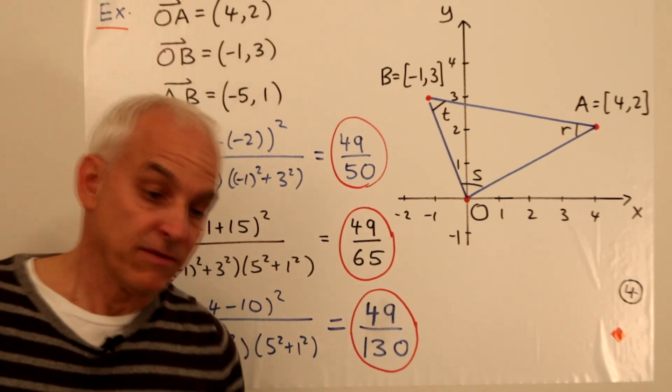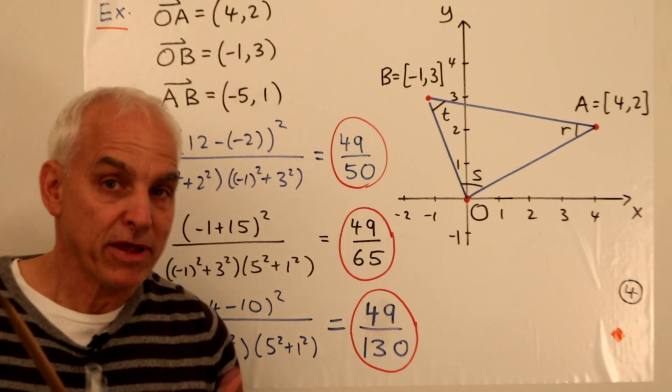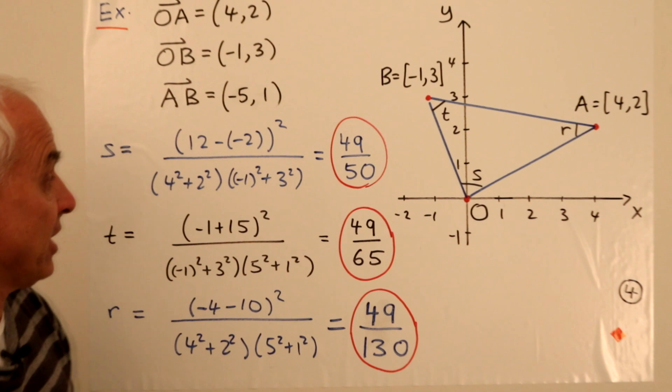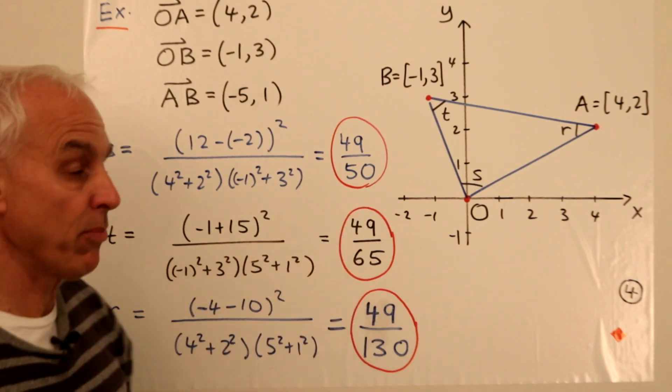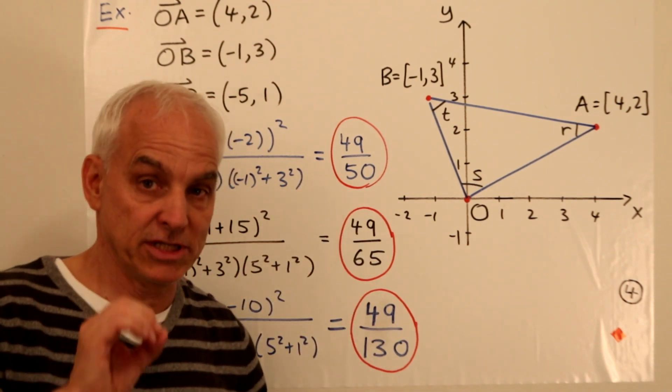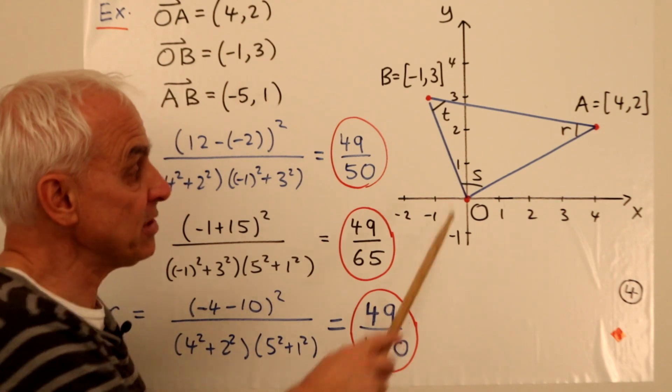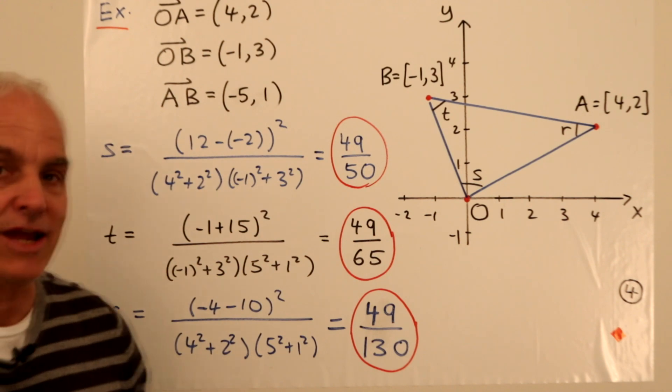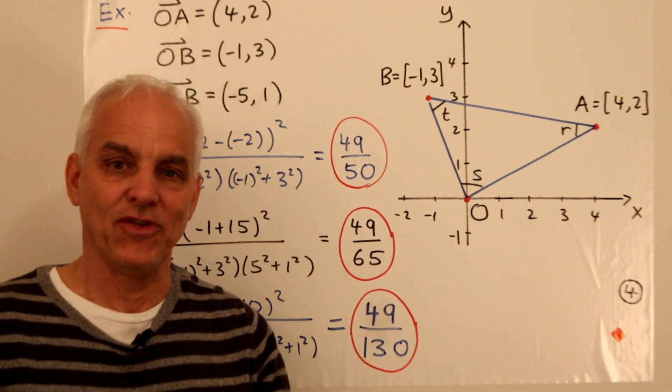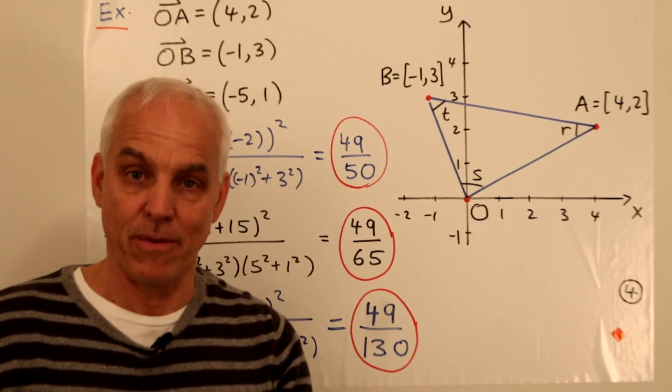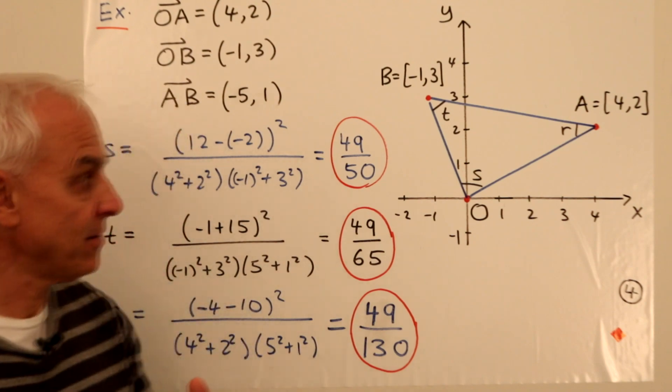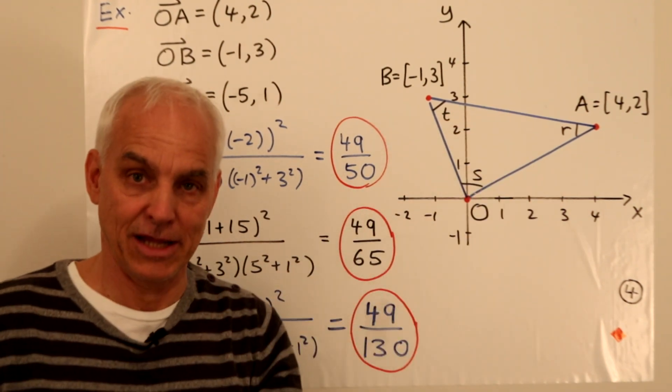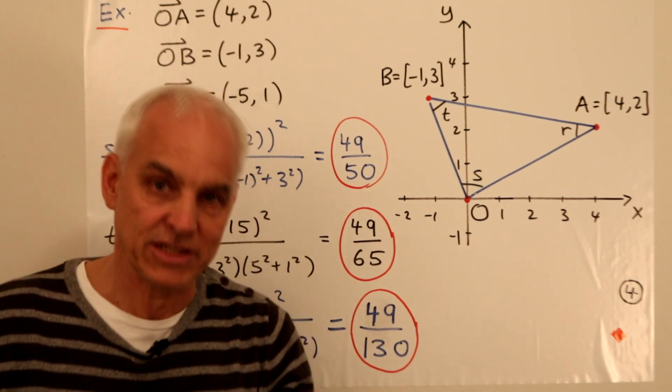So a relatively simple application of that vector formula for the spread allows us to obtain pretty simply exact precise values for the three spreads of this triangle. And I want you to appreciate how different this is from classical trigonometry, which has no way of really getting at the angles precisely. Only in an approximate fashion.